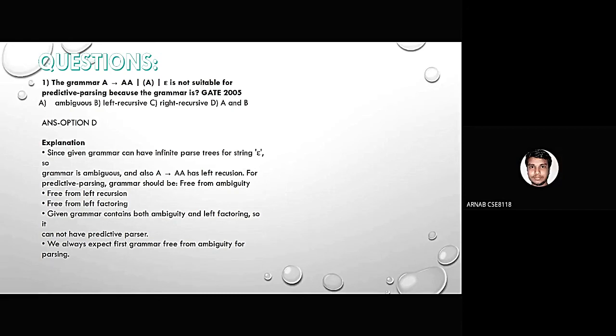First, since given grammar can have infinite parse trees for string epsilon, so the grammar is ambiguous and also A extends to double A has left recursion. For predictive parsing, grammar should be free from ambiguity. Next, free from left recursion and free from left factoring. Given grammar contains both ambiguity and left factoring, so it cannot have predictive parsers. We also expect first grammar free from ambiguity for parsing.